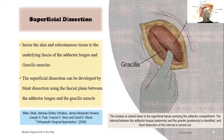Superficial dissection: incise the skin and subcutaneous tissue to the overlying fascia of the adductor longus and gracilis muscle. The superficial dissection can be developed by blunt dissection using the fascial plane between the adductor longus and the gracilis.